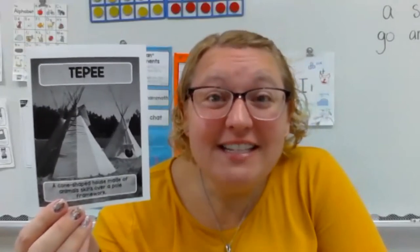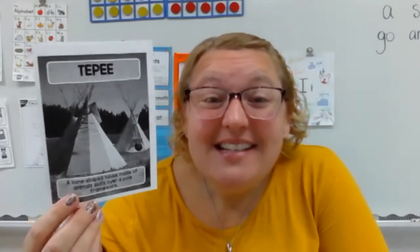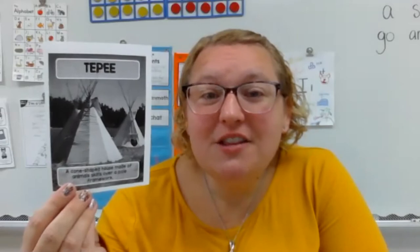Tepee! Have you ever seen a teepee before? If you've ever driven down Highway 44 and looked to the right, they have teepees on the side of the highway. A teepee is a cone-shaped house made of animal skins over a pole framework. This is a type of housing that Native Americans used — this would be like their bedroom. Maize: corn, also called maize, was an important crop to the Native Americans. It was one of their main foods and could be easily stored for the winter months.